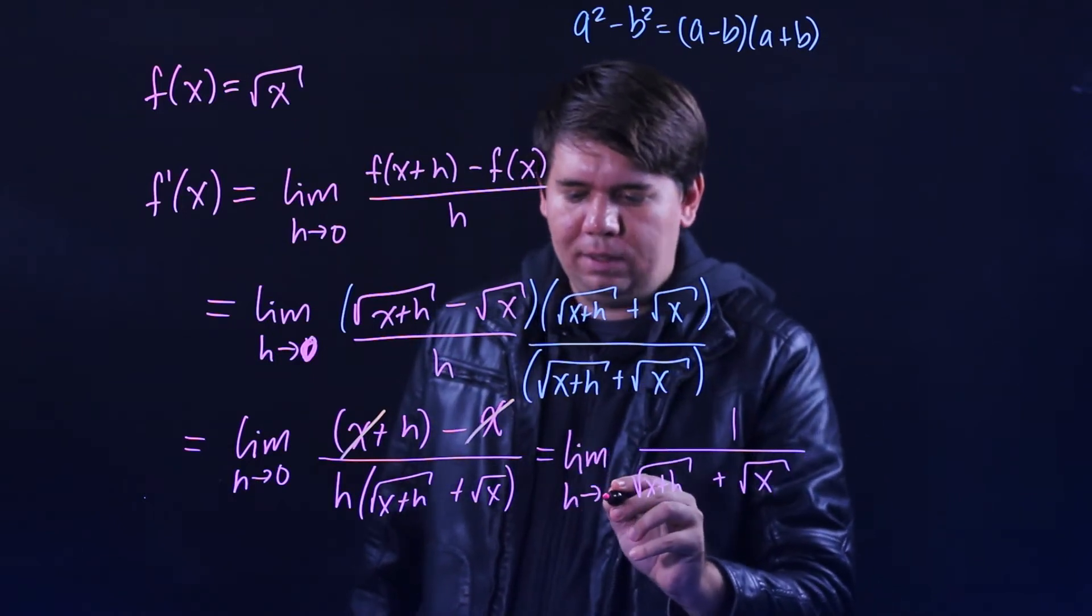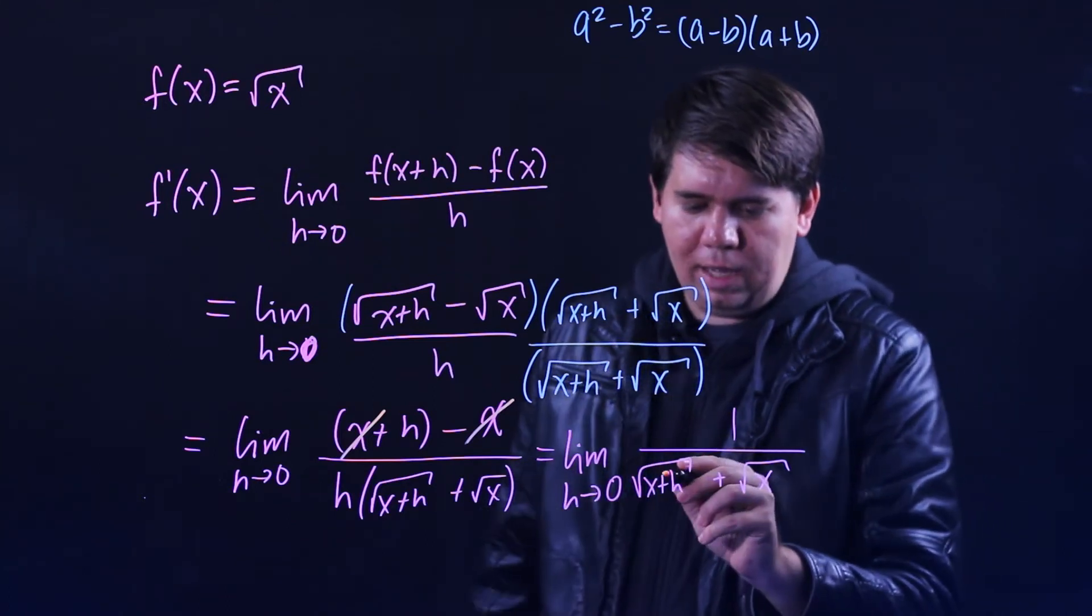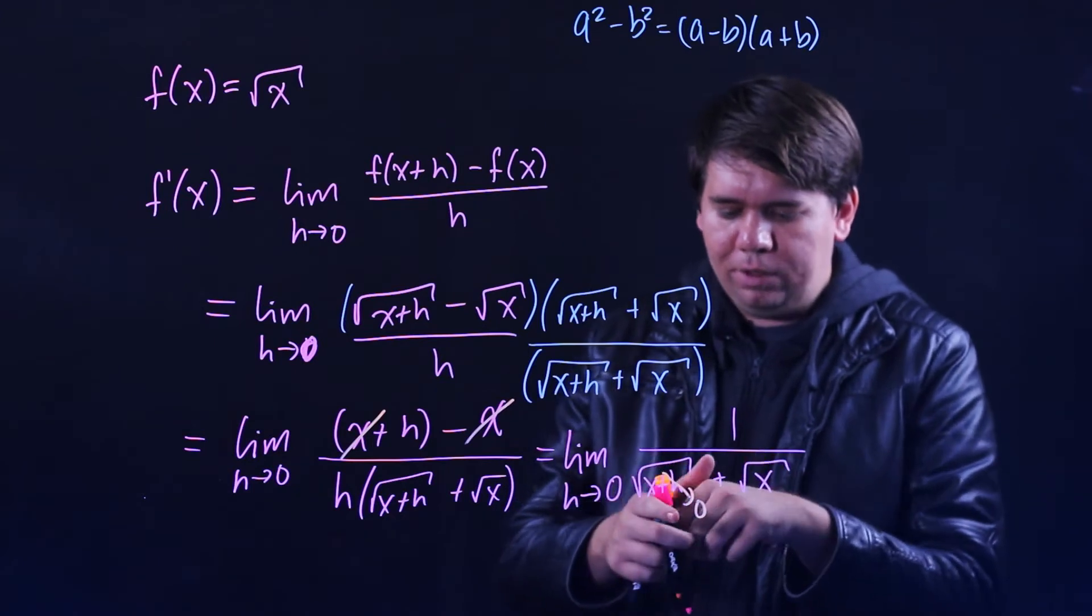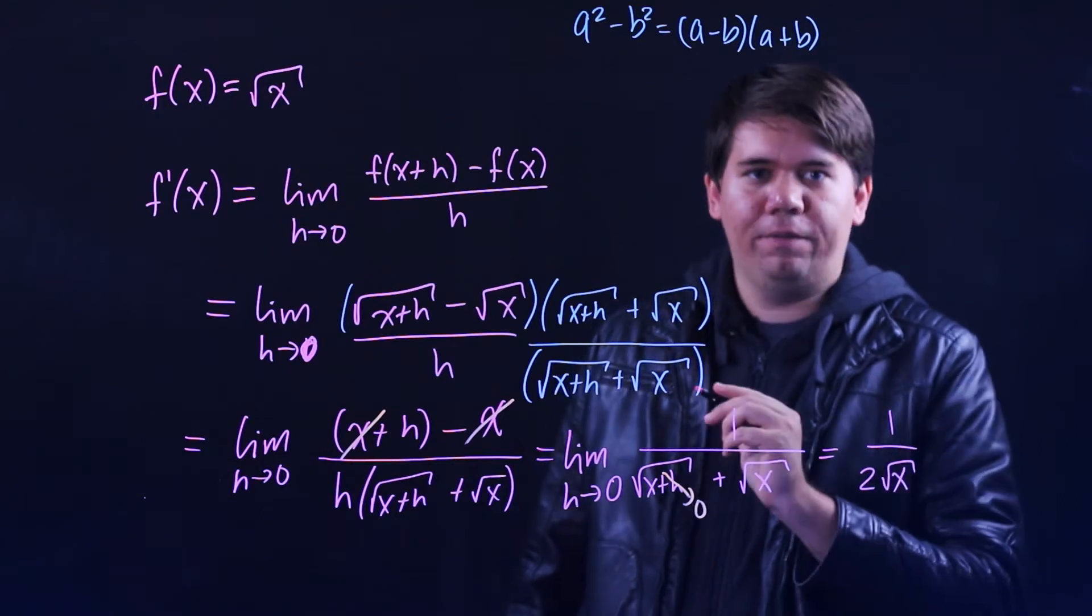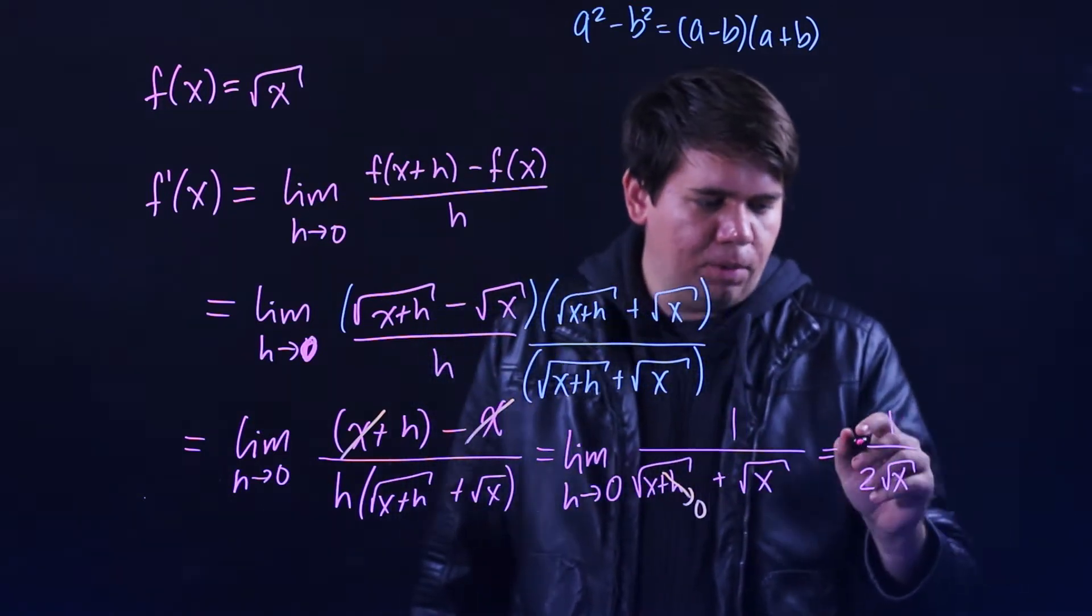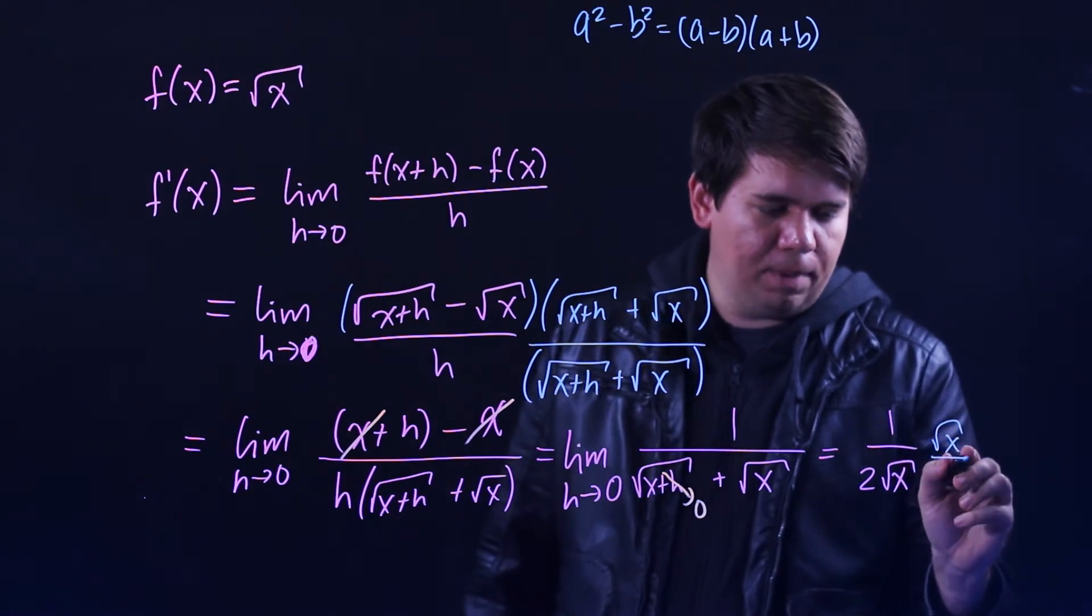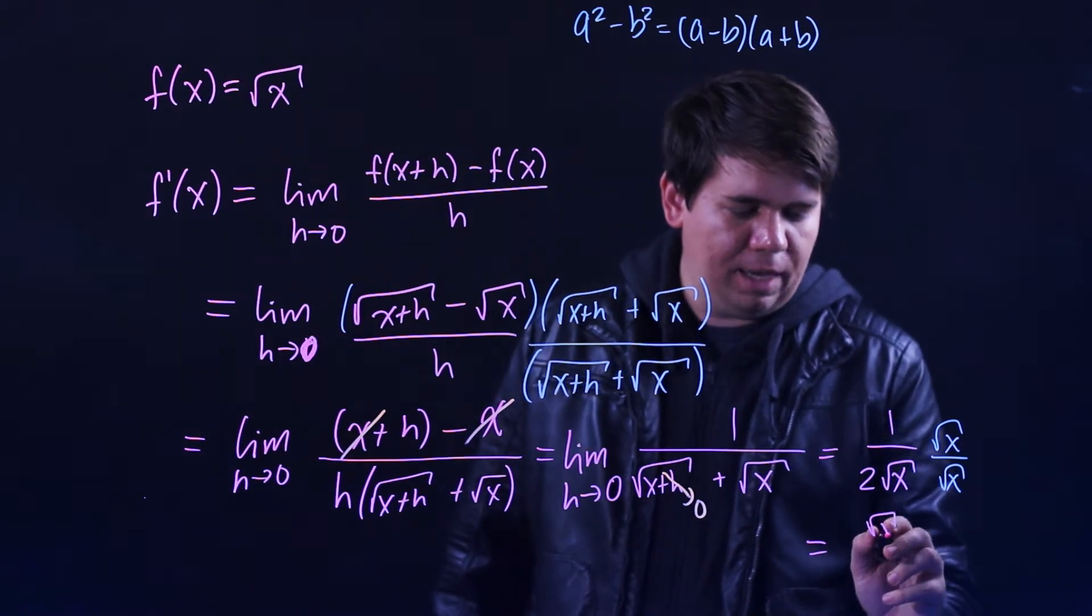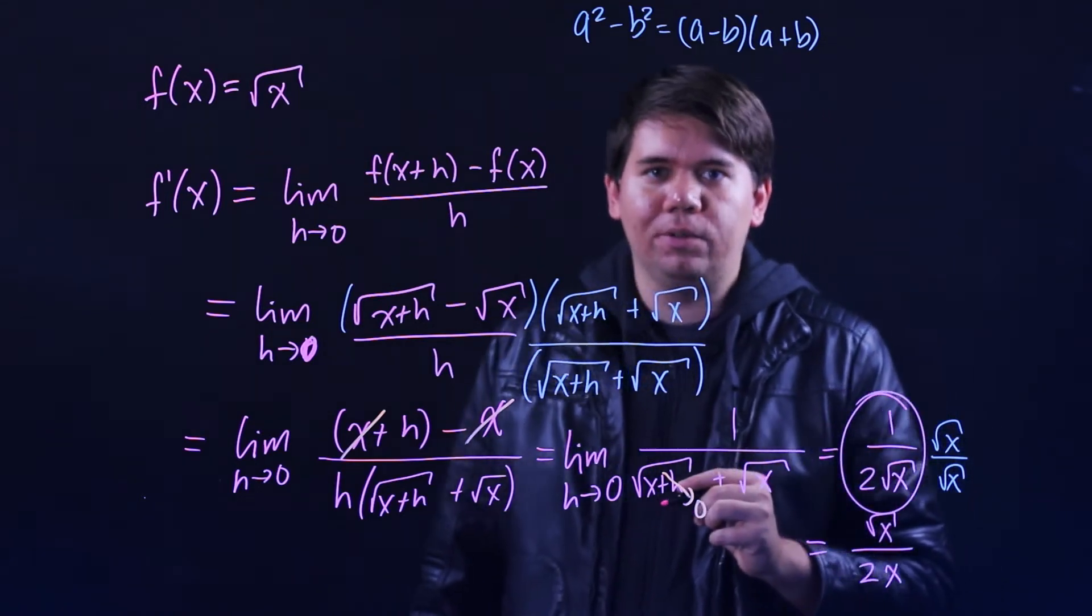Now this is a limit we can do something with, because as h goes to 0 it's well defined, it's not 0 on bottom. This is just going to be 1 over 2 square roots of x. You could write that as the square root of x over 2x to make it more presentable, but I'm happy with just leaving it as 1 over 2 square roots of x.